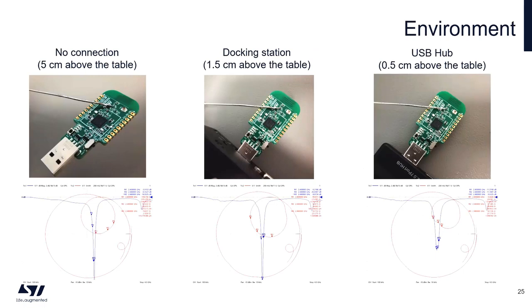Antenna parameters depend on the environment. Here we can see three examples of different working environments. Impedance red curve and return loss blue one are shown in the measurement results. In the first case the board is unplugged and 5 cm above the table. In the middle case the board is plugged into the docking station and around 1.5 cm above the table. In the last case the board is plugged into the USB hub and is about 0.5 cm above the table. In all cases the measured impedance and return loss are different. The best parameters has the board in the middle case. This is the environment for which the board was optimized by the matching network.